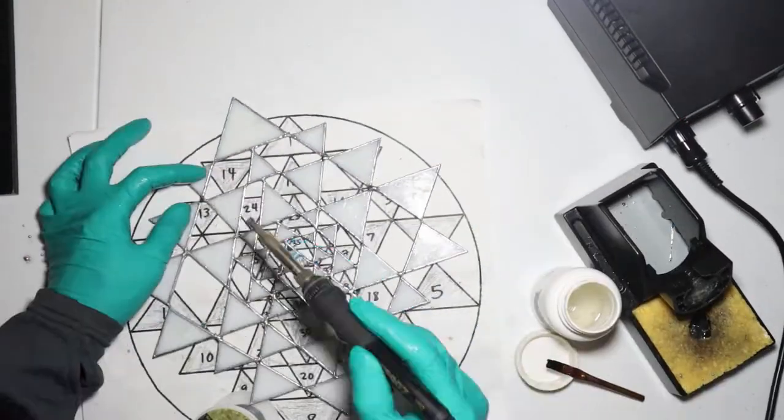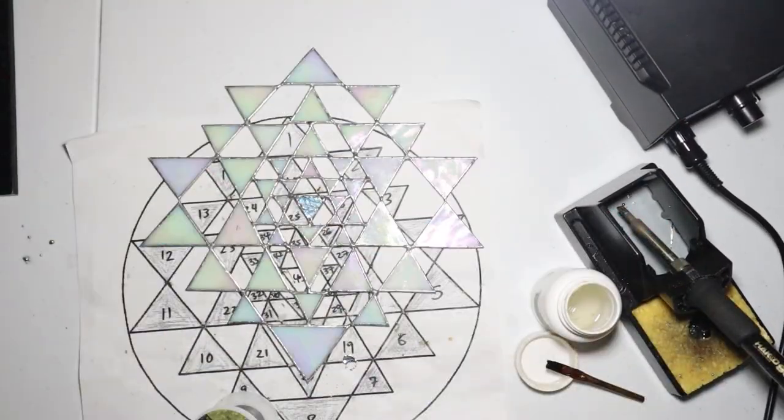Next up we're going to make the ring that goes around the Sri Yantra. For the ring we're going to use this brass rod that I found. You can solder onto brass so we'll get that from Lowe's. Let's go to Lowe's, grab the hardware, and then we'll come back and finish our project.